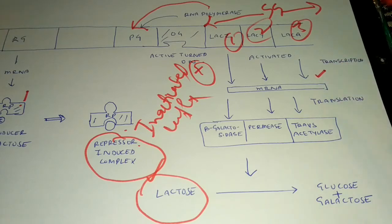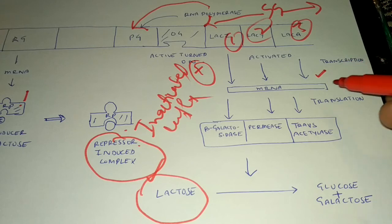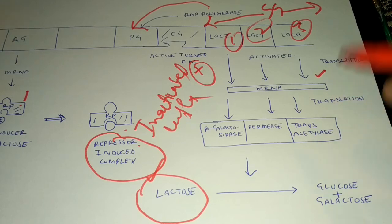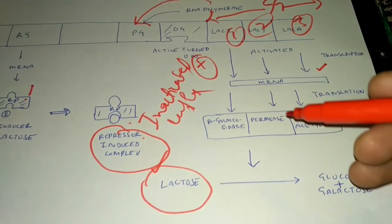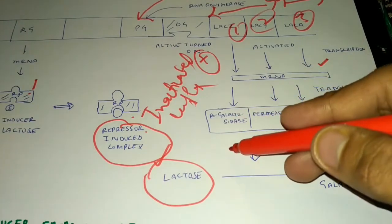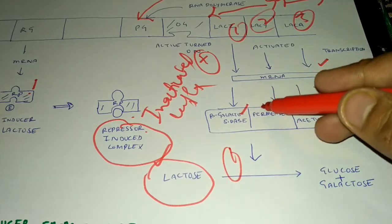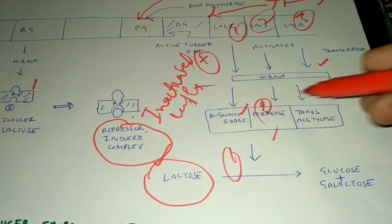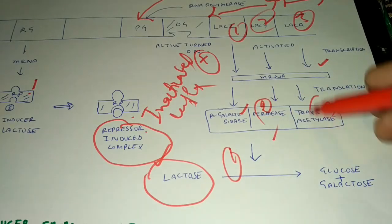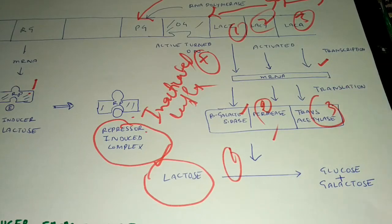This polycystronic messenger RNA is a mature type and does not need splicing, unlike eukaryotic messenger RNA. It will translate three different enzymes: first, beta-galactosidase; second, permease; and third, transacetylase.